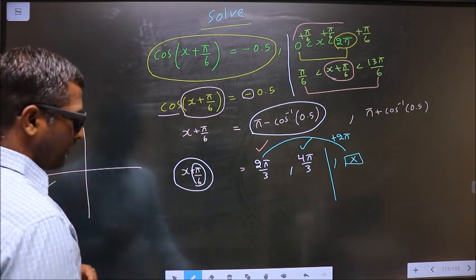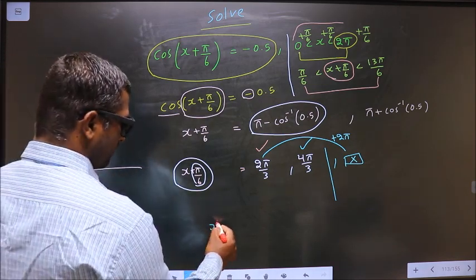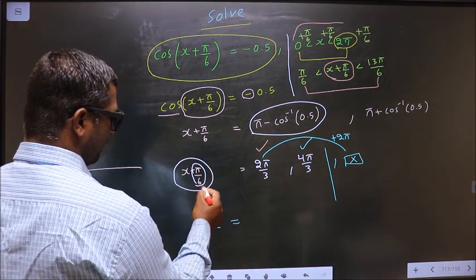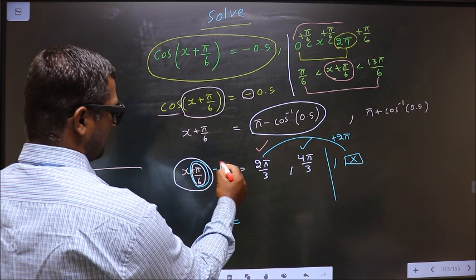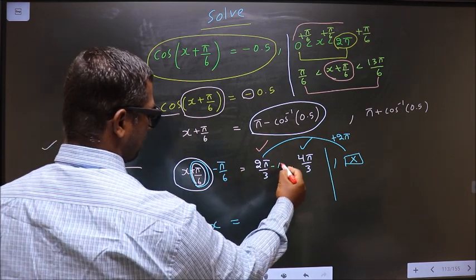Now to get the values for x we should remove this π/6. To remove that we subtract π/6 everywhere.